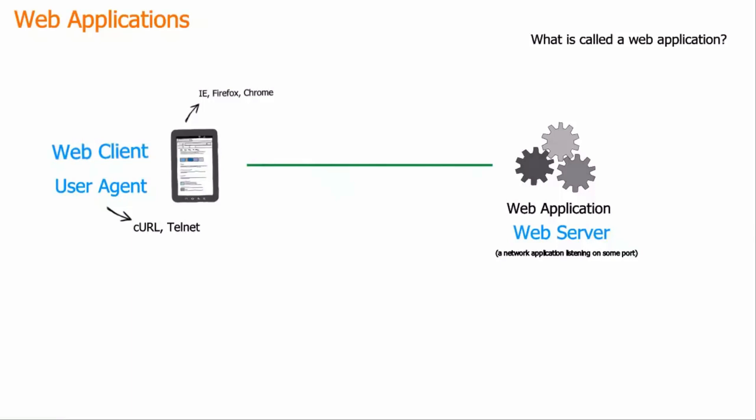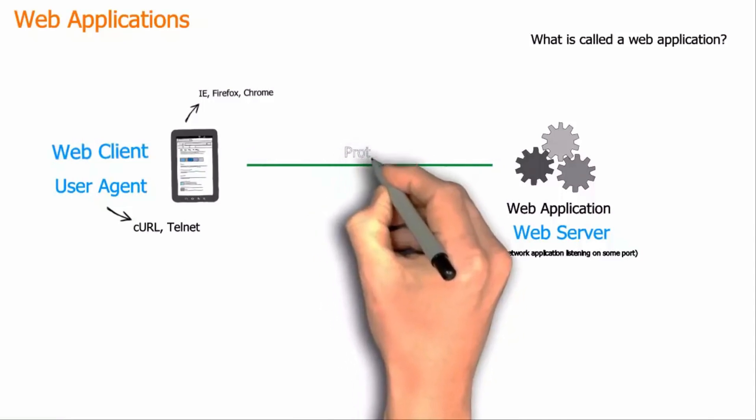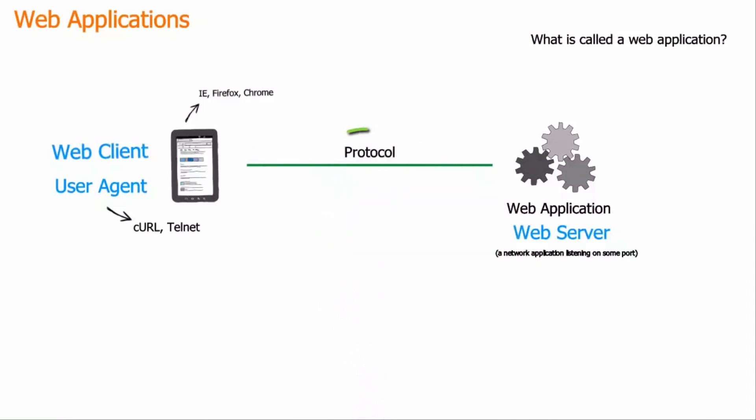So the web client or user agent communicates with the web server to get its job done. And for this communication — and actually for any communication — both parties need to use the same set of rules or grammar, which we call a protocol in technical terms. It's simple: when two people are communicating, they need to use the same language and the same set of grammar rules so that they can understand each other. Similarly, in computer science, when two applications are communicating, they need to use the same set of rules, which we call protocol.